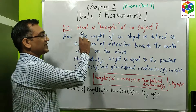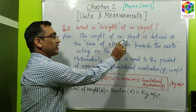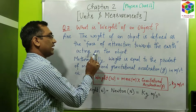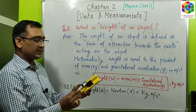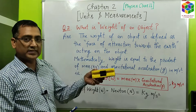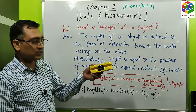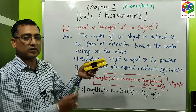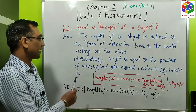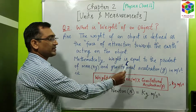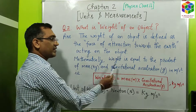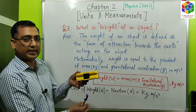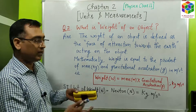Now we will see what is the weight of an object. The weight of an object is defined as the force of attraction towards the earth acting on the object. For example, this is a duster — the weight of this duster will be equal to the force acting on it towards the earth. Mathematically, weight is equal to the product of mass and gravitational acceleration — the mass of the object multiplied by how much gravitational force is acting on it.